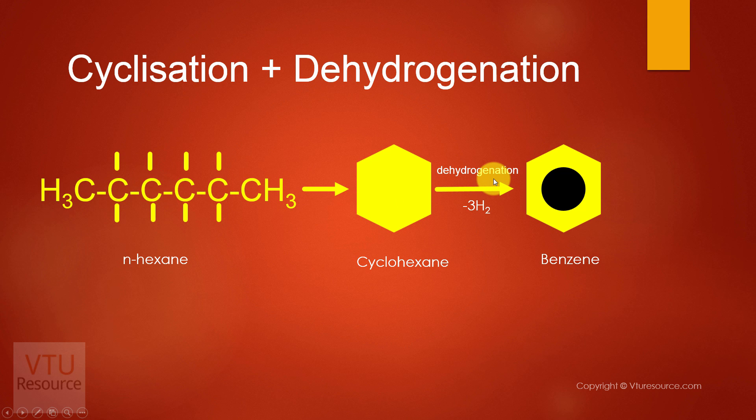So n-hexane first is subjected to cyclization to obtain cyclohexane. This on dehydrogenation, what do you mean by dehydrogenation? Removal of hydrogen atoms gives you aromatic hydrocarbons. So aromatic hydrocarbons have higher octane number compared to straight chain, branched chain, and cyclic hydrocarbons. So as I told earlier, in practice whatever petrol we are using it comprises of straight chain, branched chain, cyclic, and aromatic.